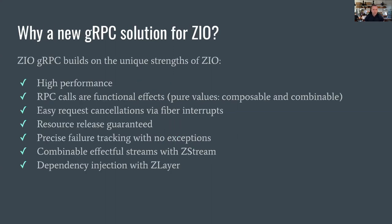Why do we need a new gRPC solution for Zio? Zio as a concurrency framework offers advancements not available anywhere in Scala today. ZIO gRPC builds on those unique strengths to make it super easy to build high-performance, type-safe microservices using Zio's basic building blocks — so it meets really well with the rest of your Zio application. For example, RPC calls are just functional effects. When you make an RPC call, it doesn't happen at the point you call the method — you get back a pure value that is composable and combinable.